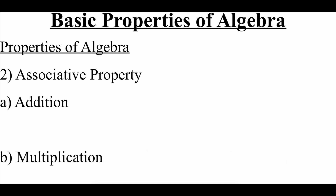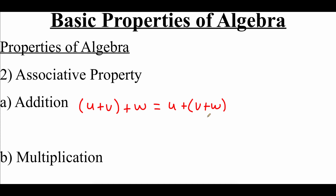The next property is the associative property, and again this holds true for both addition and multiplication. The associative property lets us regroup things. If we've got three real numbers — say u plus v plus w — the order of operations would normally have us do the parentheses first, but we can regroup: u plus v plus w gives the same result as u plus (v plus w). The same holds for multiplication: (u times v) times w equals u times (v times w).